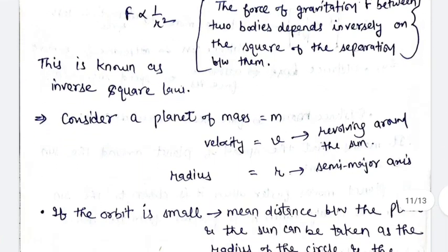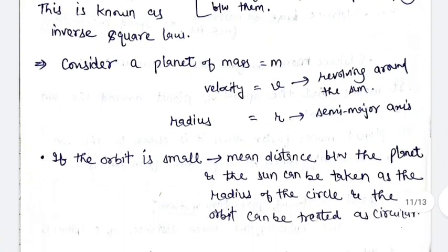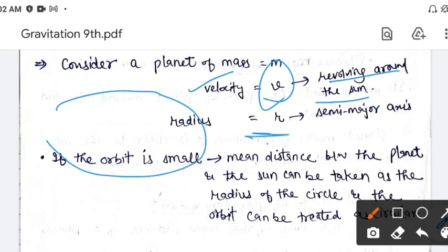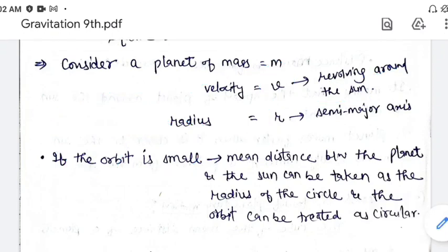So इसको prove करने के लिए हम use करेंगे Kepler's law का. So हम assume करते हैं कोई भी planet है जिसका mass M है, velocity उस planet की है V — वो velocity जिसकी help से कोई भी planet sun की around move करता है. And R is the semi-major axis — जैसे मैंने आपको last lecture में Kepler's laws पढ़ाया था, वहाँ भी बताया था, semi-major axis क्या होती है.